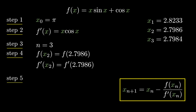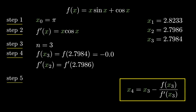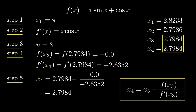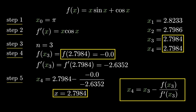Putting n=3 in Newton-Raphson: x₄ = x₃ − f(x₃)/f'(x₃). f(x₃) = f(2.7984) = 0, and f'(x₃) = f'(2.7984) = −2.6358. Substituting these, we get x₄ = 2.7984. The ratio f(x₃)/f'(x₃) = 0, so x₄ = x₃. The function value is 0, confirming that x = 2.7984 is the root of x·sin(x) + cos(x).